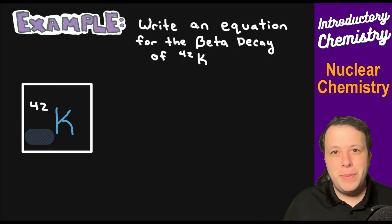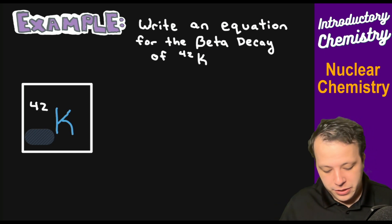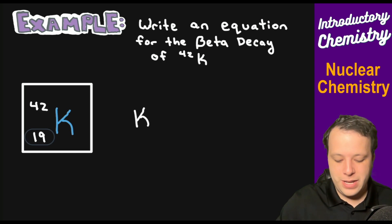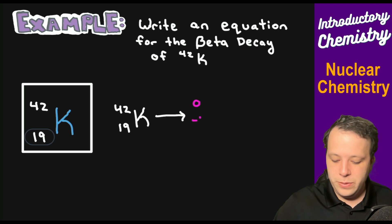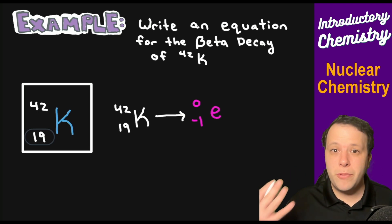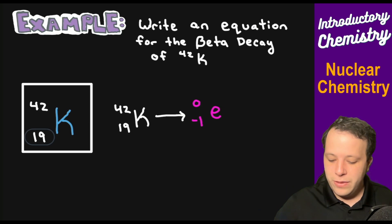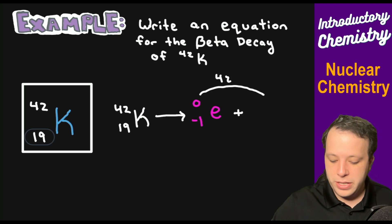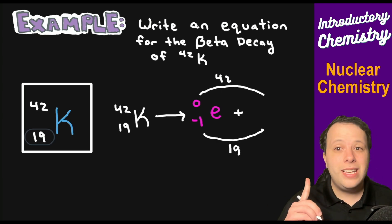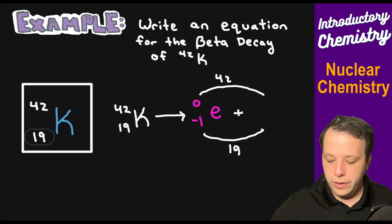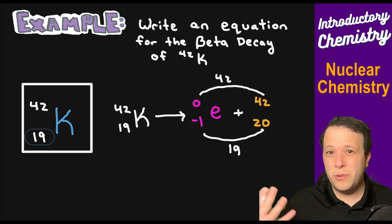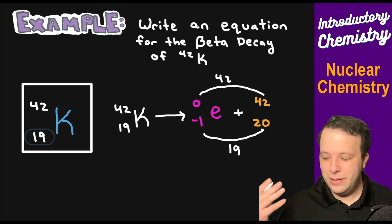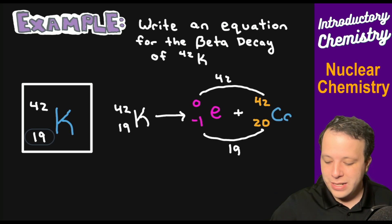Let's write an equation for the beta decay of potassium-42. With K-42, we write down the element with atomic number 19 and mass 42, and show how it's going to break down. With beta decay, we use 0, negative 1, equivalent to an electron breaking off — a high energy electron. What's on top has to equal 42, and what's on the bottom has to equal 19. We're adding a negative number, so 20 plus negative 1 equals 19, and 0 plus 42 is still 42. What element is atomic number 20? Looking at the periodic table, you'll quickly see that is calcium-42.